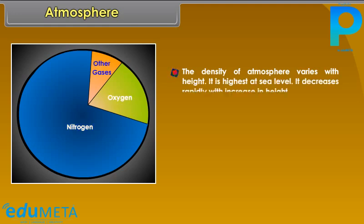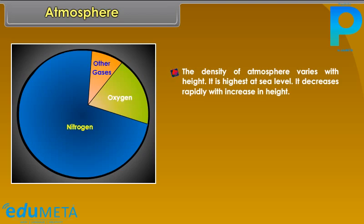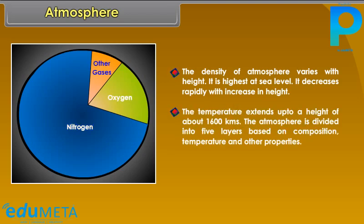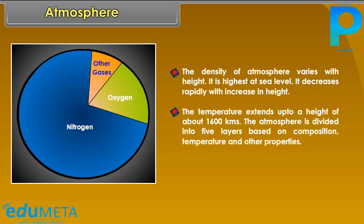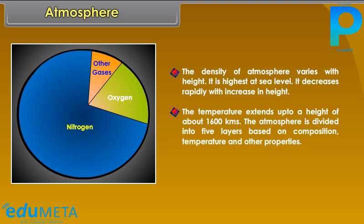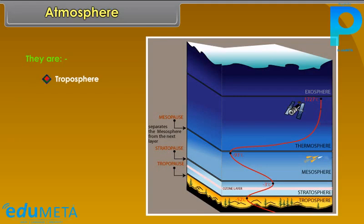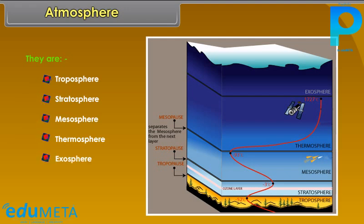The density of the atmosphere varies with height. It is highest at sea level and decreases rapidly with increase in height. The atmosphere extends up to a height of about 1,600 kilometers. It is divided into five layers based on composition, temperature, and other properties: troposphere, stratosphere, mesosphere, thermosphere, and exosphere.